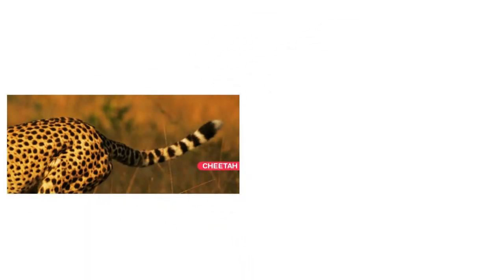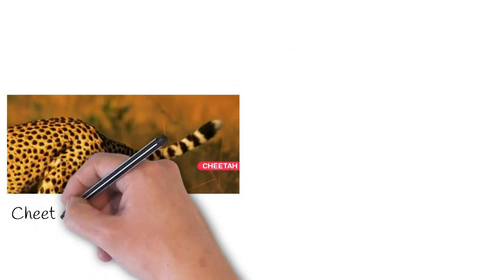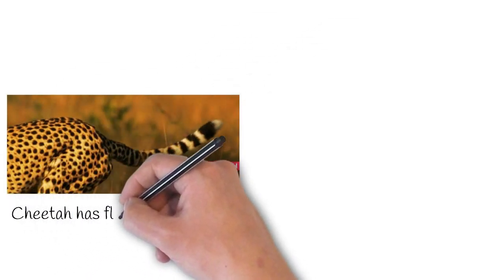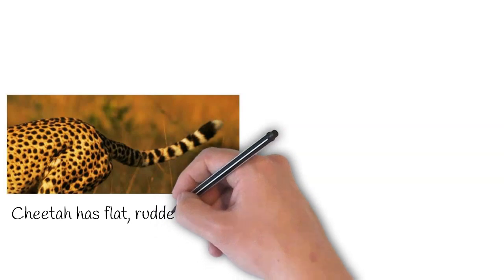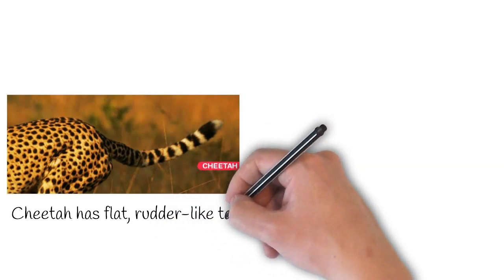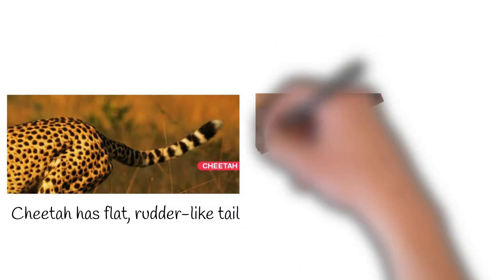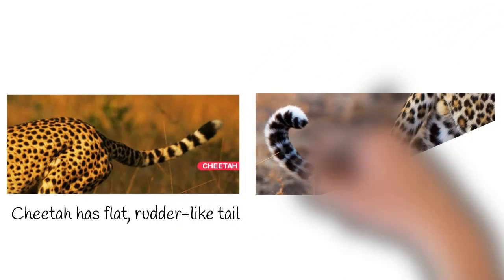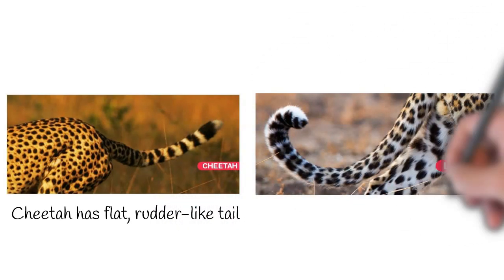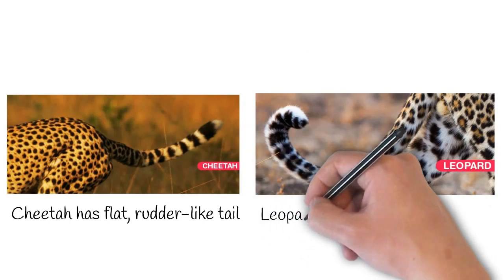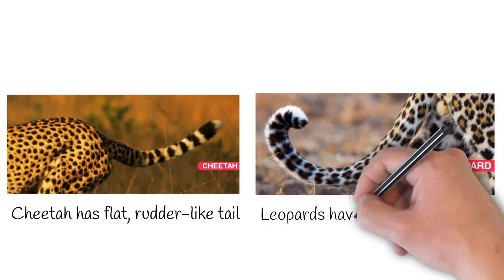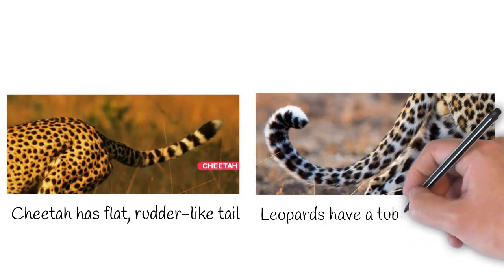Of the many differences, the tail is also a body feature which differs between both. A cheetah has a flat, rudder-like tail, whereas a leopard has a tubular, round tail.